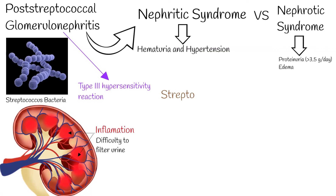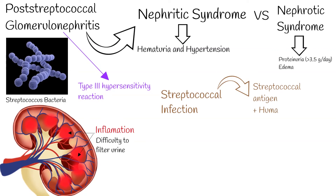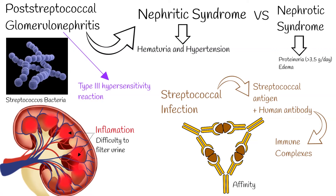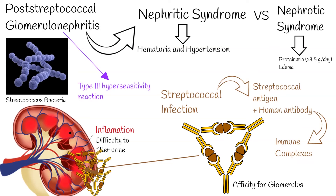The mechanism is a type 3 hypersensitivity reaction. The body responds to nephrogenic streptococcal infection by forming immune complexes containing the streptococcal antigen with a human antibody that have affinity for sites in the glomerulus. As soon as binding occurs to the glomerulus, the complement is activated. Complement fixation causes the generation of additional inflammatory mediators, damaging the vascular wall.